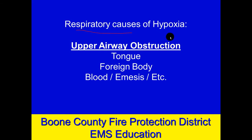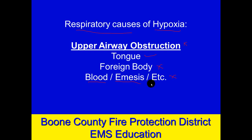Other respiratory causes: you could have an upper airway obstruction, most commonly the tongue. It could also be a foreign body — especially small kids who explore things in their mouths and choke. If you can't get any air in, obviously you can't transport oxygen to the tissues. Another very common cause of upper airway obstruction is things we can suction out: blood, emesis, and other materials depending on mechanism of injury. We want to always manage those aggressively and early.